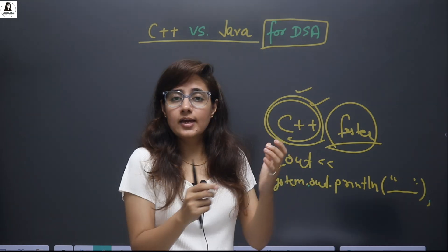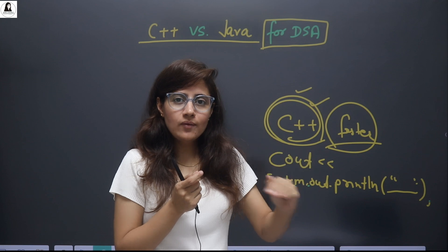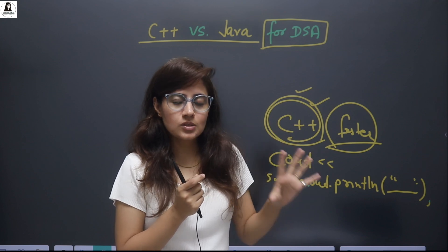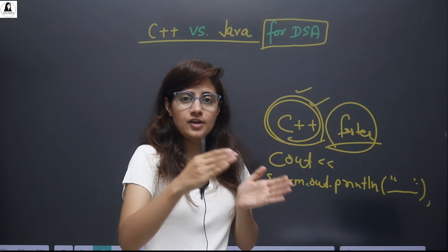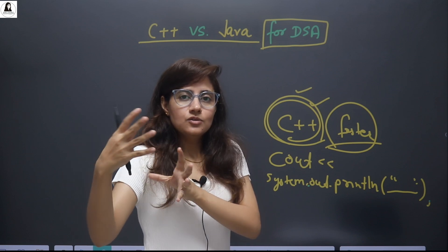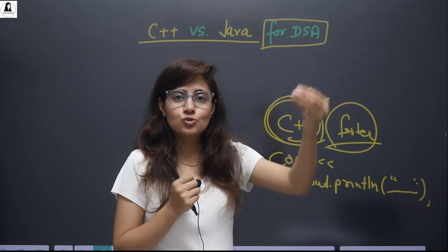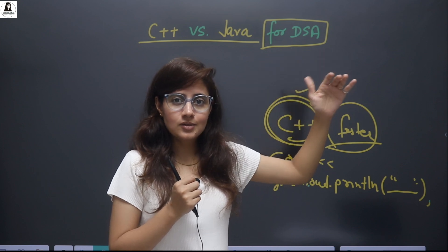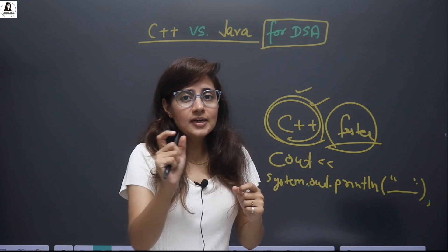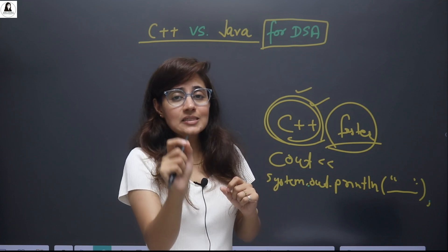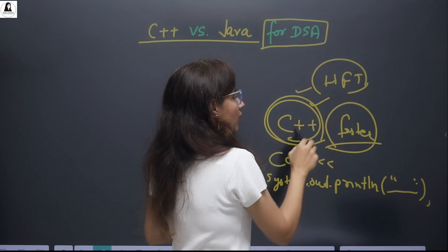If you want to go into industries like developing operating systems, compilers, system software, or drivers that require low-level memory management, go for C++. It is still used there. Also in HFTs — High Frequency Trading firms — which nowadays offer packages of 1 crore, 2 crore, or even 4 crore to IITians. These are way more than offers from product-based companies. HFT developers write complex algorithms, and there the speed, execution time, and latency matter a lot. Because C++ is faster, HFTs use C++ to write their algorithms.